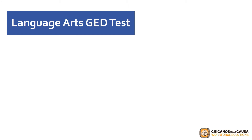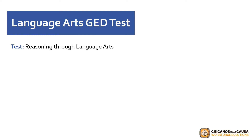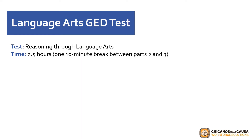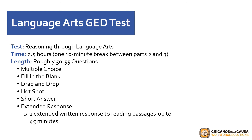The Language Arts GED Test is called Reasoning through Language Arts. Time-wise, it lasts approximately two and a half hours with a ten-minute break between parts two and three. Within these two and a half hours, you will be answering roughly anywhere between 50 to 55 questions, which vary in type and form. These questions are offered in the format of multiple choice, fill in the blank, drag and drop, hotspot, short answer, and an extended response, which requires reading passages of up to 45 minutes. We highly recommend that you take your GED Language Arts test immediately after completing this section in the book, so all of the information you have gained is fresh in your mind and will hopefully lead to a successful test result.